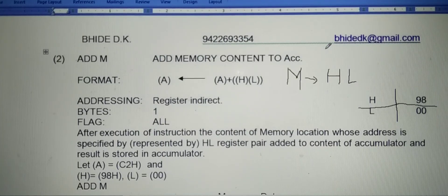The second instruction from the Arithmetic Group is ADD M. That means add memory content to accumulator.